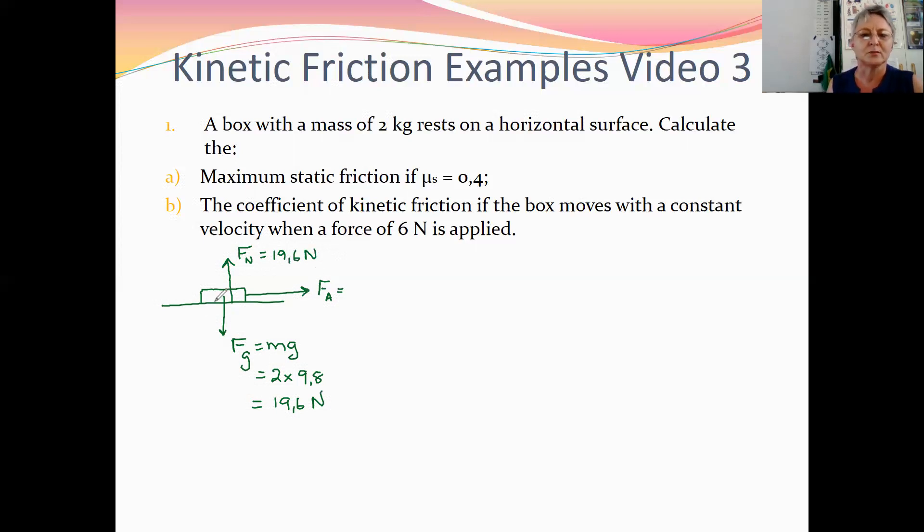They give us that the box is initially stationary, so the frictional force would be static friction. They also tell us that the coefficient of static friction is 0.4. Now this value is calculated when the frictional force is a maximum static friction.